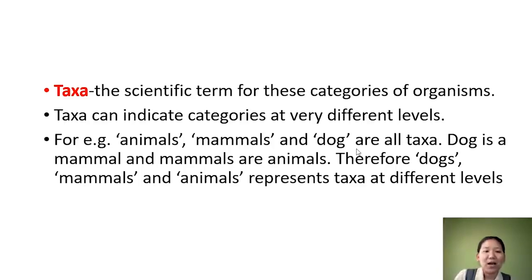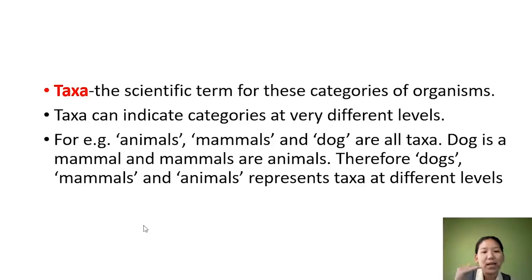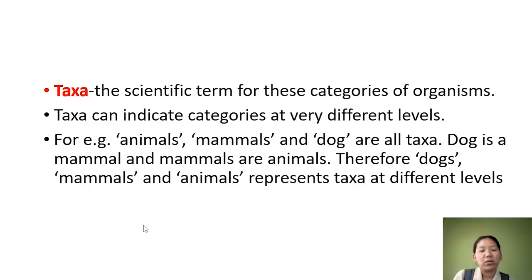Taxa can indicate categories at different levels. For example, the words 'animals,' 'mammals,' and 'dogs' are all taxa but at different categories — dogs are mammals, and these mammals are animals. So dog, mammal, and animal are different levels, and all of them are called taxa representing different levels.